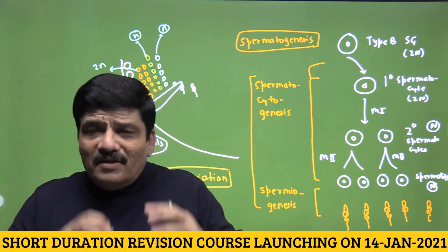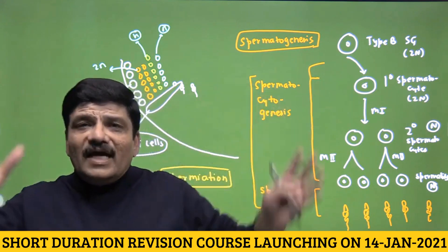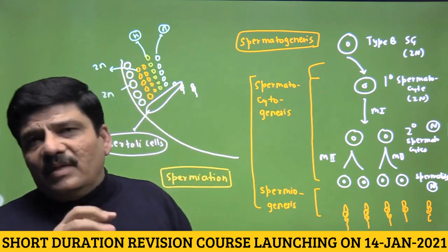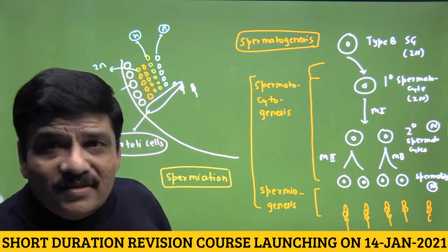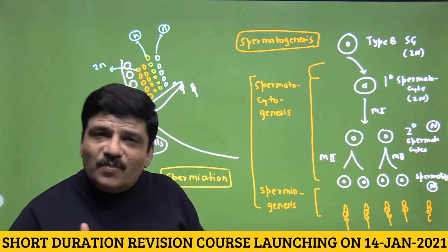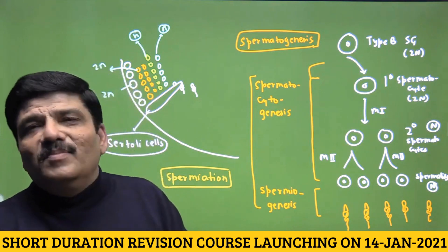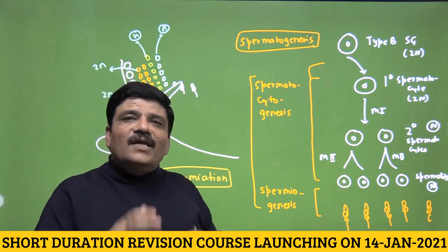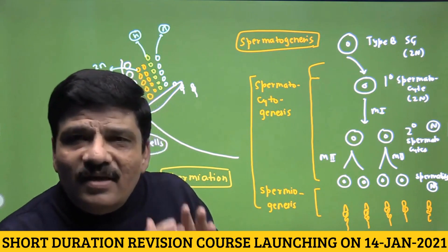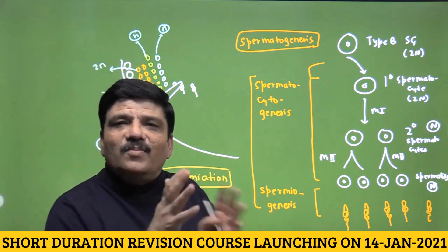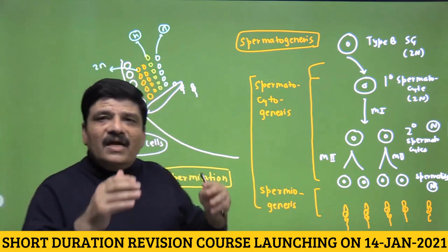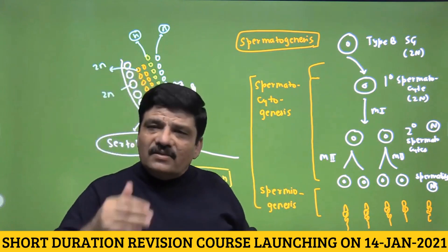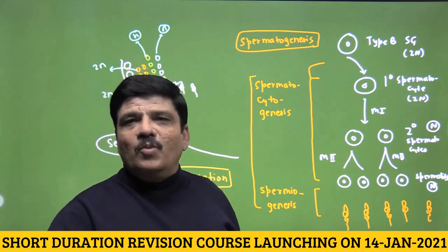To summarize the terminology: the entire process is called spermatogenesis. It consists of spermatocytogenesis — from spermatogonia up to spermatid formation — and spermiogenesis — the differentiation of the spermatid into the mature sperm, facilitated by Sertoli cells (nurse cells). A primary spermatocyte leads to 4 sperms, a secondary spermatocyte to 2, and a spermatid to 1.